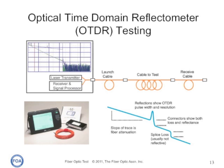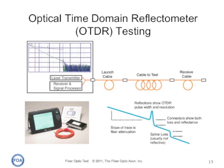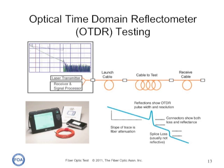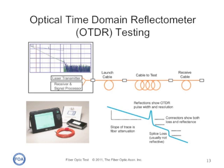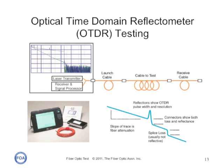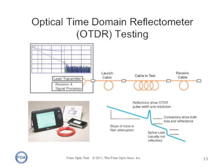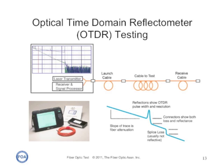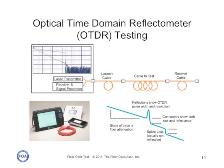Optical time domain reflectometers use an indirect method of testing the fiber optic cable plant. They use the backscattered light — which is the main cause of loss in an optical fiber — to create a trace, a picture or snapshot of what goes on in the fiber. Using that snapshot, you can measure connector loss, splice loss, and the attenuation coefficient of the fiber. You can also measure the length of the fiber and find faults in the fiber. OTDRs are very useful instruments, but they're also complex and they need a lot of training in order to understand how to interpret an OTDR trace.